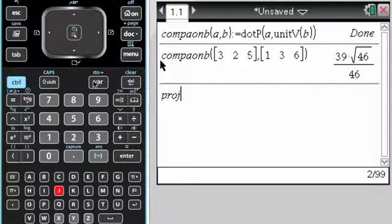I might also be doing a lot of projections of A on B, where we need to give it two arguments again. I could actually call upon this function here, component of A on B, and then multiply that by the unit vector of B again.